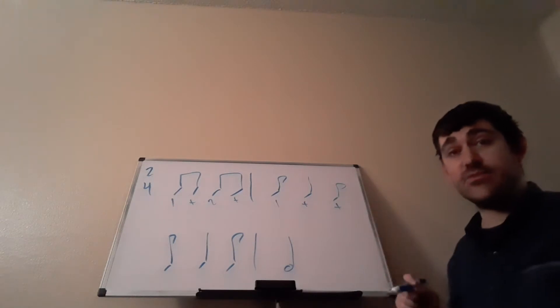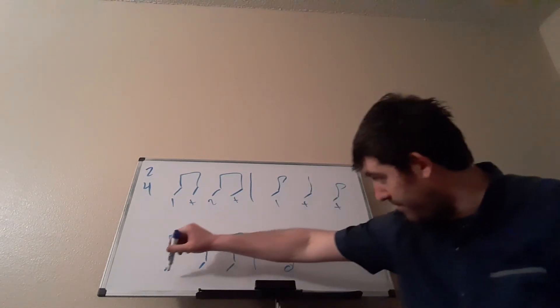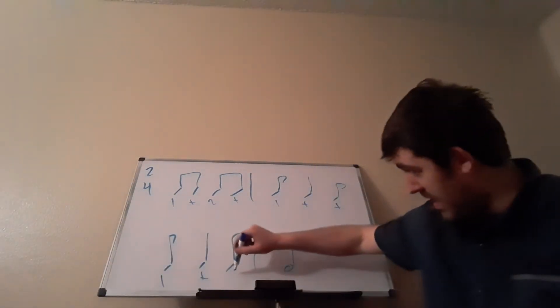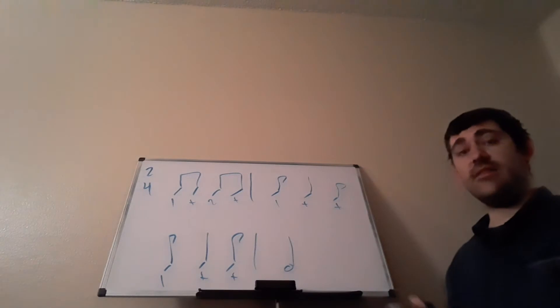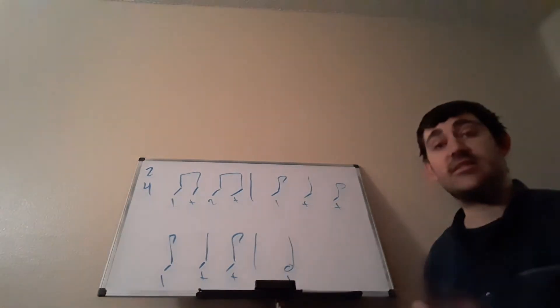Measure three, we have the same exact rhythm. So, what we can actually do is we're going to cheat a little and just write down this rhythm right over here. One, and, and. And then, finally, we have a half note. The half note is on beat one, and it takes up two whole beats.